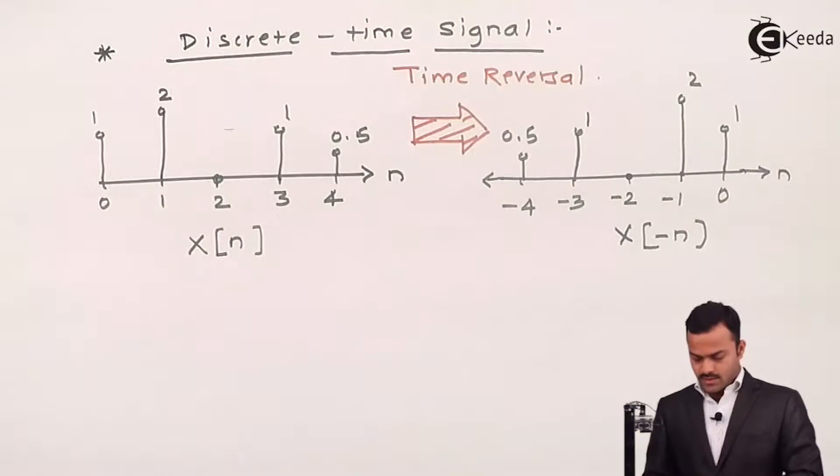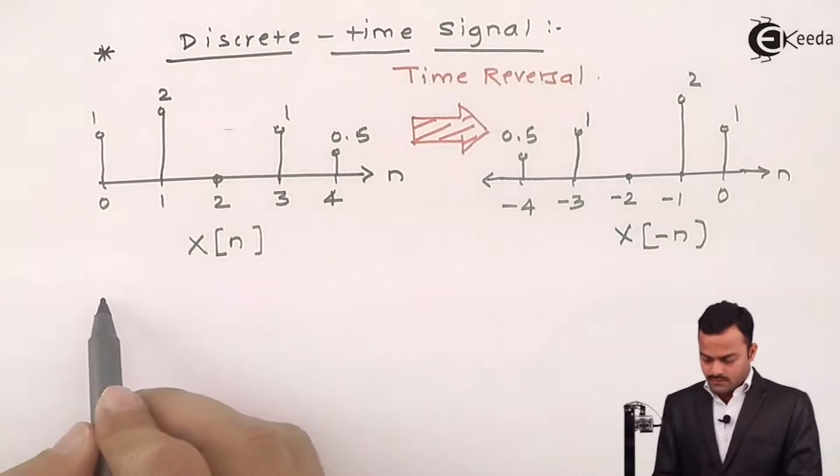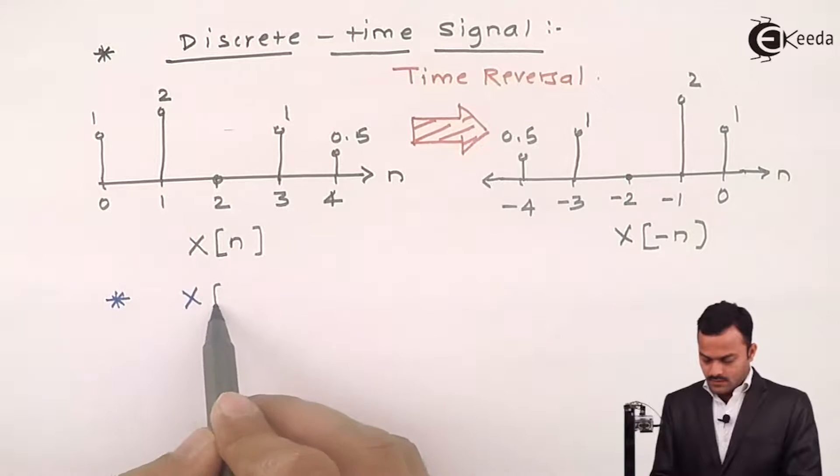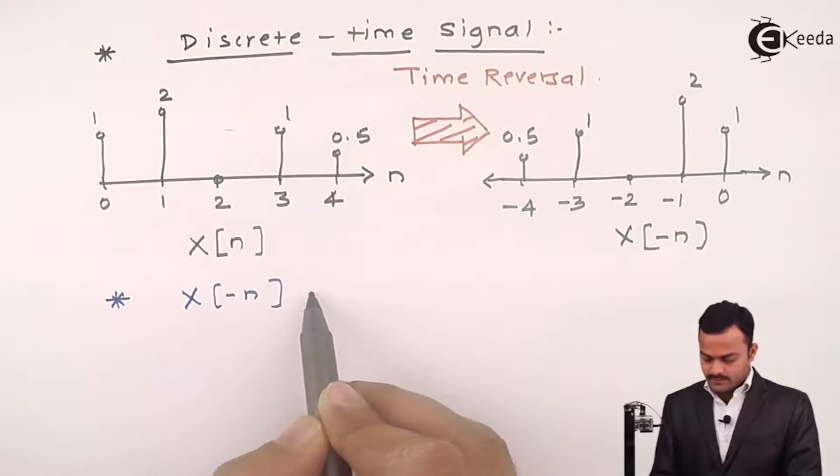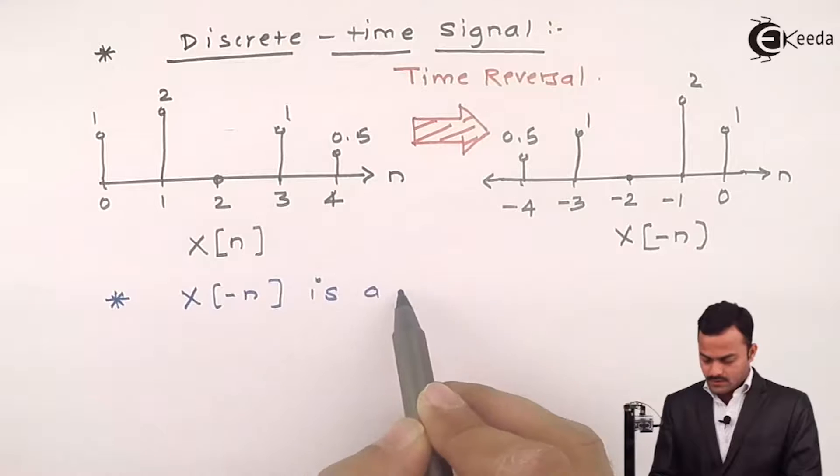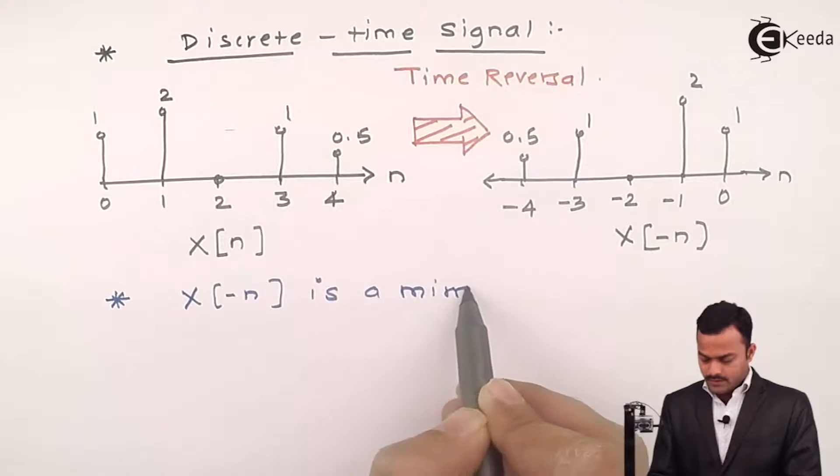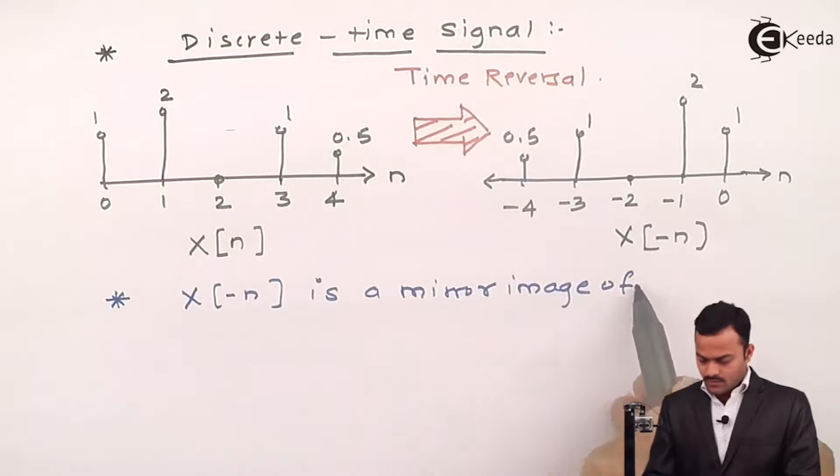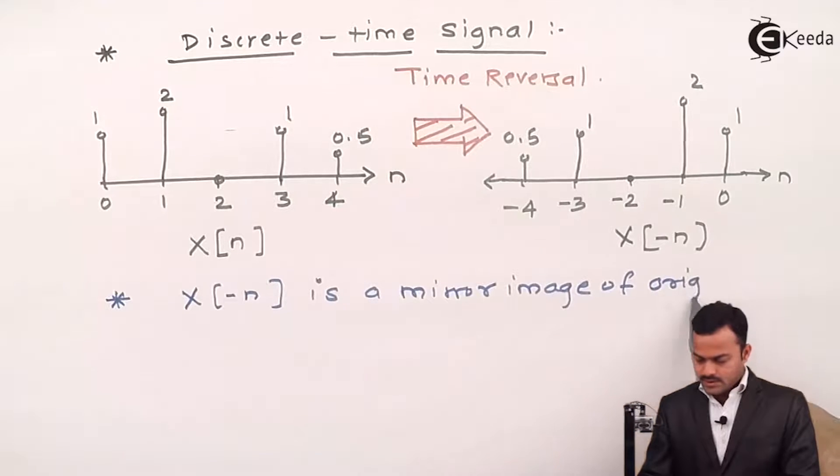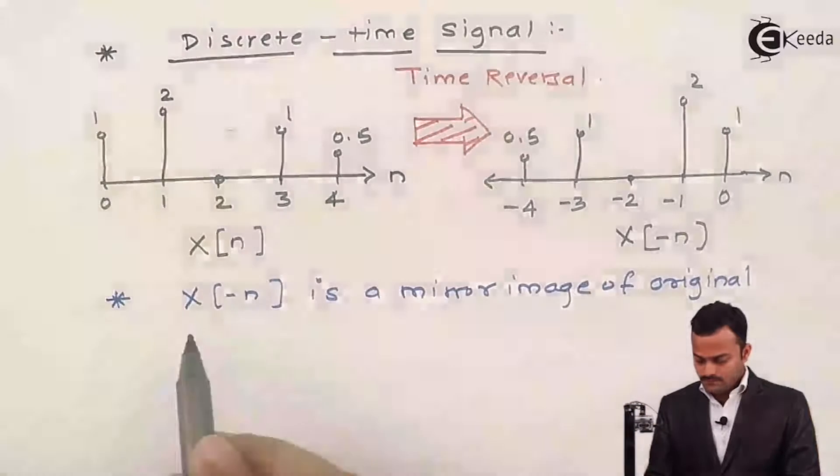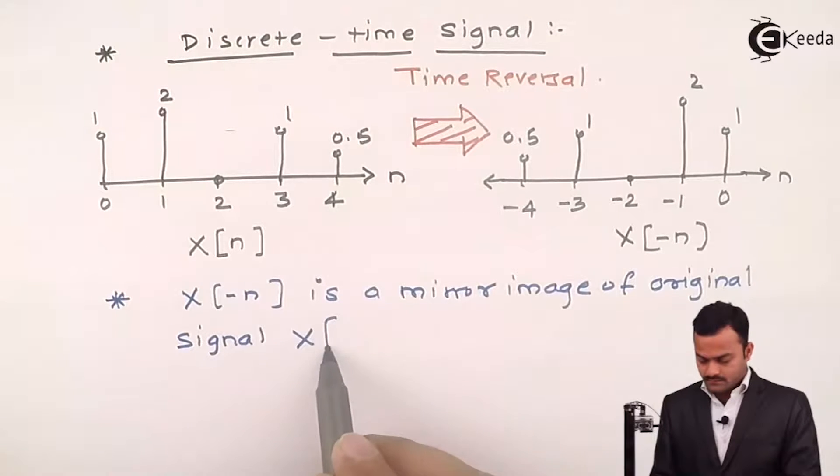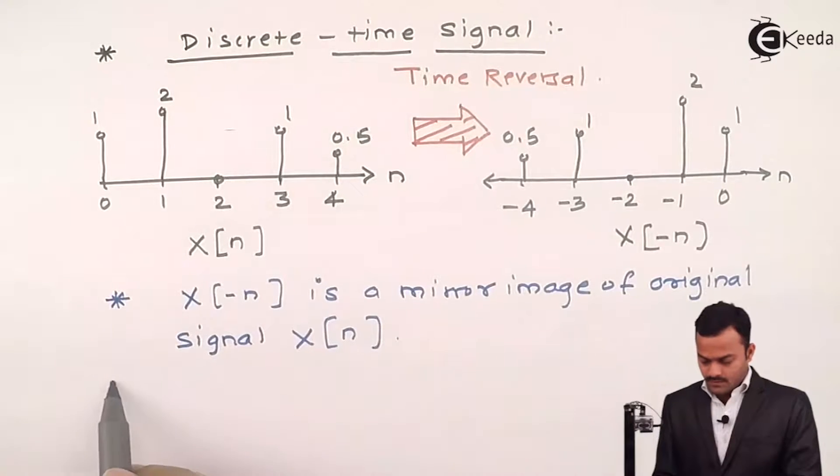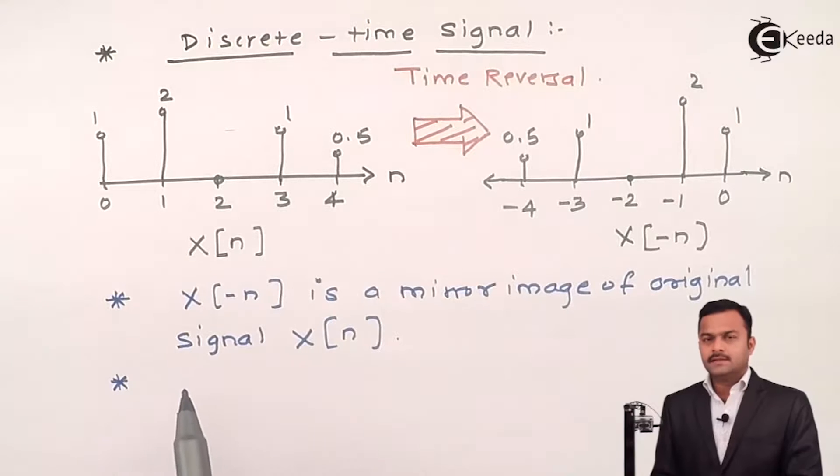Once again what are the conclusions we can draw from this? X of minus n is a mirror image of original signal which is X of n and most importantly being a change in the independent variable that is n.